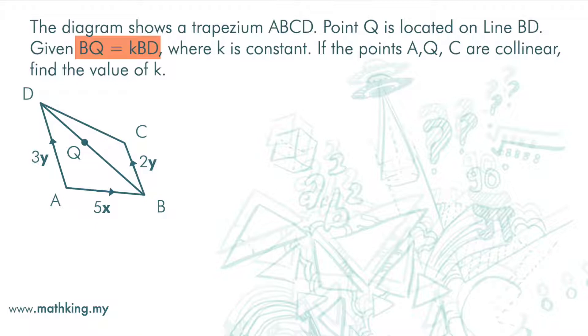Look at this. BQ equals KBD. If K is 0.5, then BQ is 0.5 of BD, and so Q is in the middle of line BD. If K is 0.75, then BQ is 0.75 of BD. Then point Q should be somewhere here. The length of BQ is 0.75 of BD.